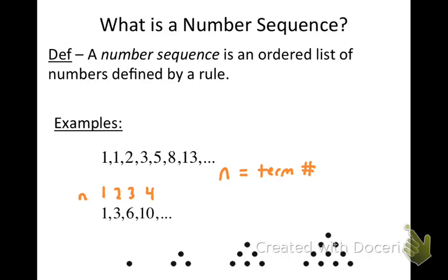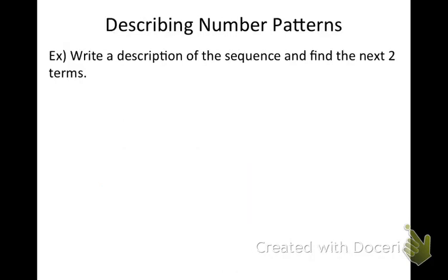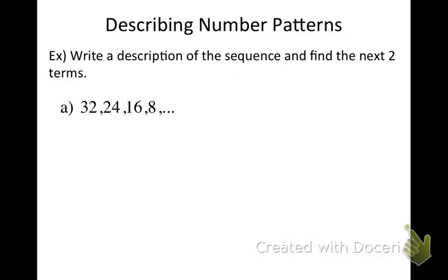There are some examples of sequences. The next thing I want you to be able to do is describe the patterns in a number sequence — write a description of the sequence and find the next two terms. Let's begin with this sequence: 32, 24, 16, 8. Whenever you're analyzing a sequence, all you're doing is looking for a pattern, and this happens to be one of those really easy patterns to spot.